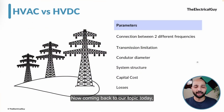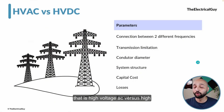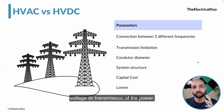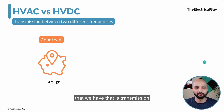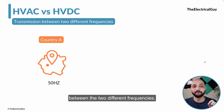Now coming back to our topic today — high voltage AC versus high voltage DC transmission of power. Let us start with the first parameter: transmission between two different frequencies.